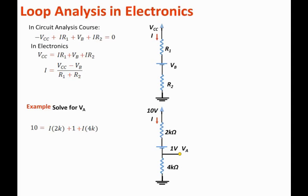This is a very simple equation, so now I can solve directly for I. It is one equation, one unknown. I is equal to 10 minus 1 over 6k, which is equal to 1.5 mA.